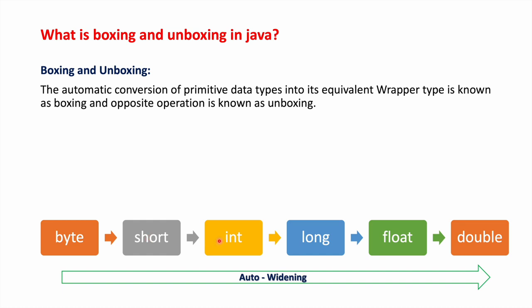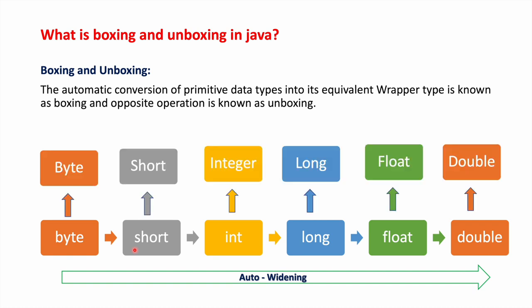We have byte, short, int, long, float, and double — these are all the primitive types. These primitive types will be automatically cast to their respective wrapper classes: byte to Byte, short to Short, int to Integer, long to Long. The wrapper classes are also automatically converted back to their corresponding primitive types.